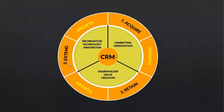The diagram shows three points: point one says acquire, point two says retain, and point three says extend. First we need to acquire the business, then we need to retain that business, and then we need to extend it. The inner circle says information technology, innovation, marketing, operations, and shareholder value creation. These are key points through which CRM manages customers.